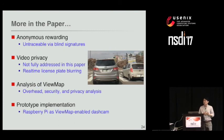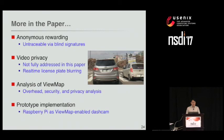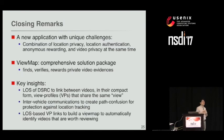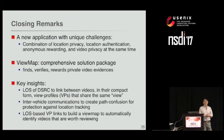There are more details in our paper, including anonymous rewarding, video privacy, analysis, and prototype implementation. In summary, this work introduces a new application with unique challenges: location privacy, location authentication, anonymous rewarding, and video privacy simultaneously. We propose ViewMap as a comprehensive solution. Our key insight is to use the line-of-sight property of DSRC to link videos sharing the same scene, and to use inter-vehicle communication to create path confusion to protect against location tracking. Thank you for listening — I'm happy to answer questions.